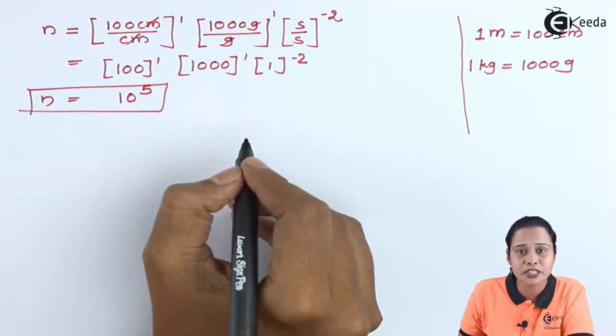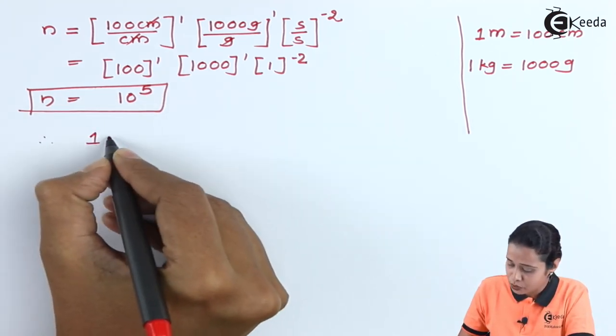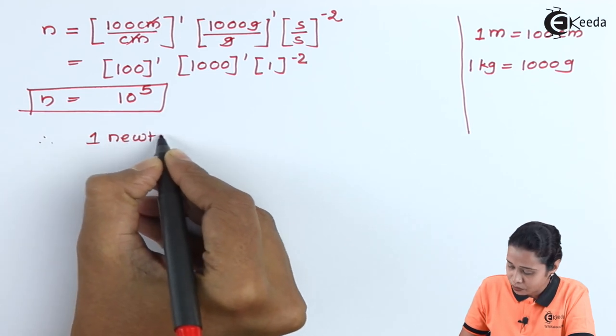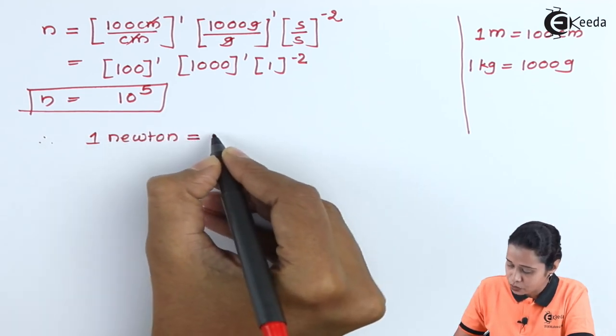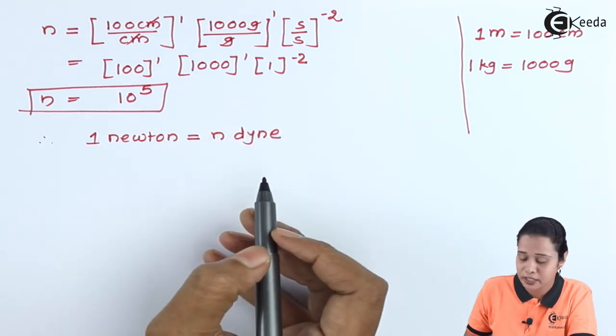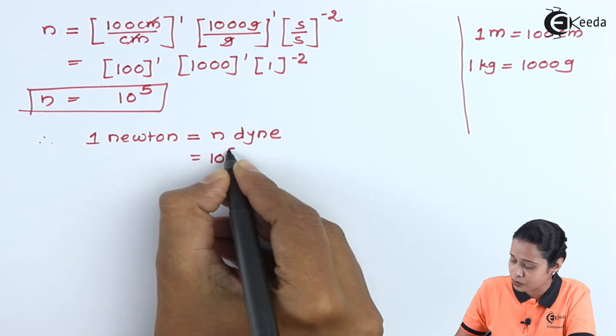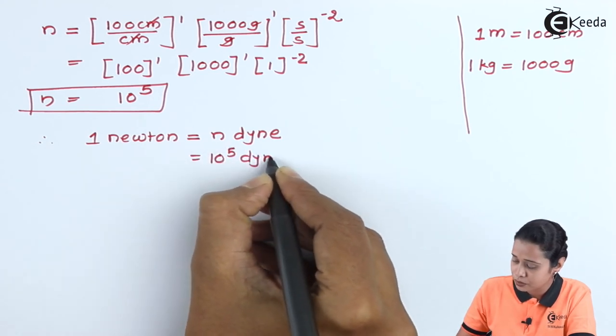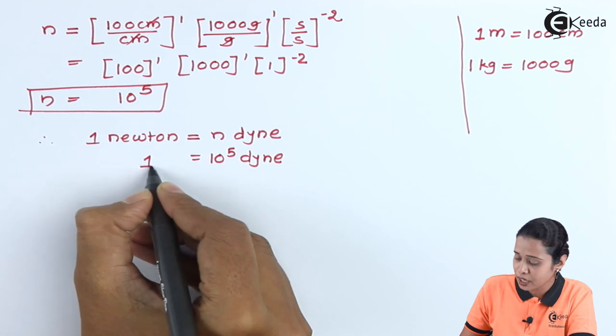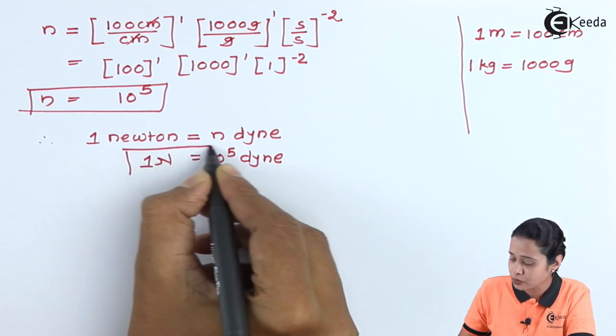Just substitute this value in previous equation. Hence, we have 1 Newton is equal to N dynes. And just now we have found out the value of N. Value of N is 10 raise to 5. It means 1 Newton is equal to 10 raise to 5 dynes.